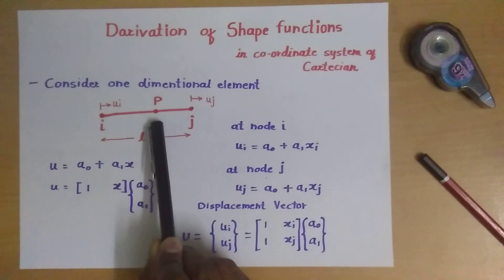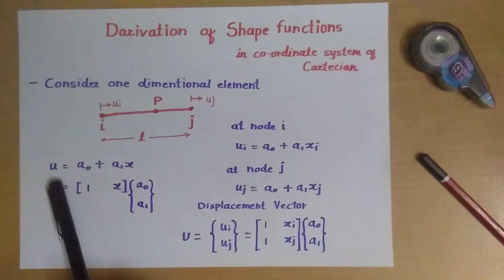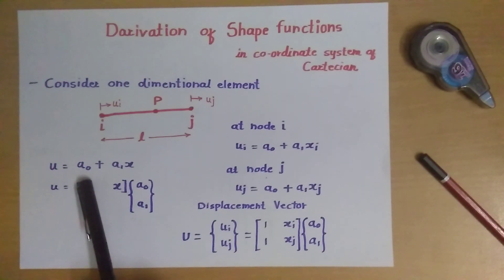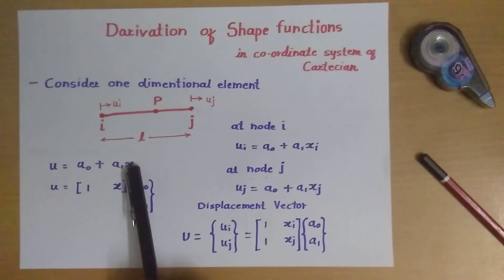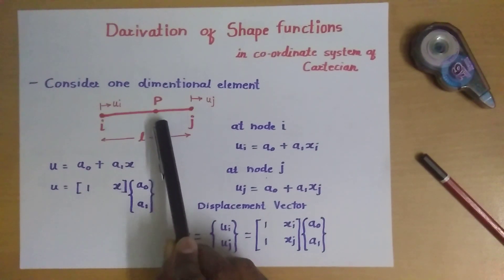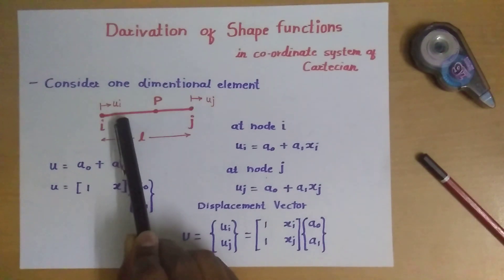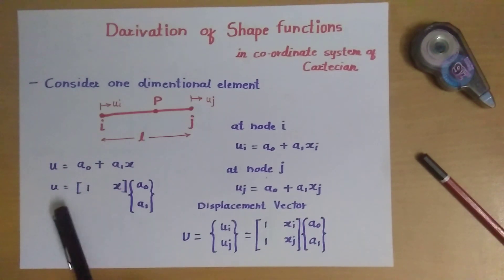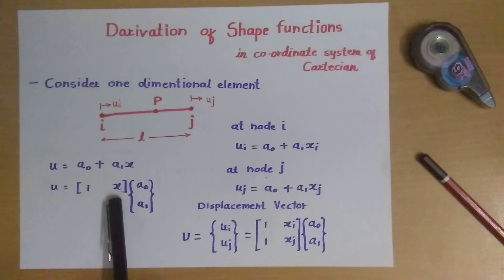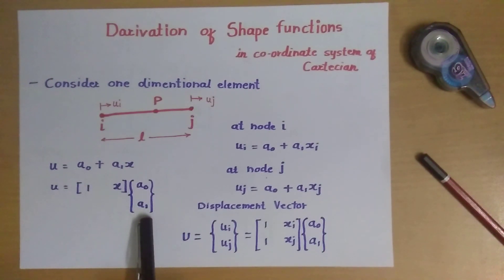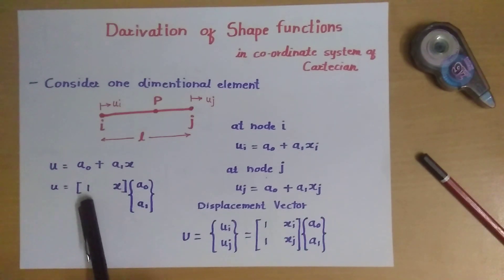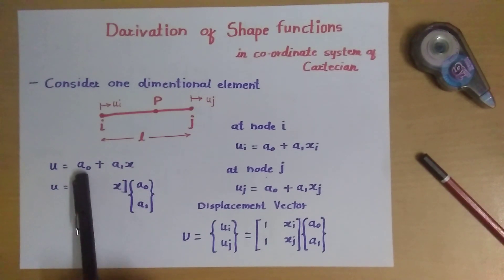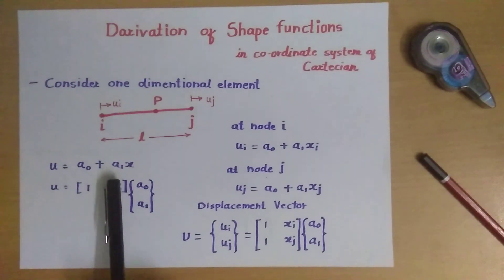To find the deformation at point p, we use the interpolation formula: u is equal to a0 plus a1x, where x is the coordinate of point p. We can write this in matrix form as u equals [1, x] multiplied by the column matrix [a0, a1]. Multiplying these two matrices gives us a0 plus a1x.